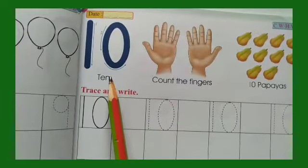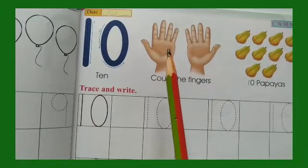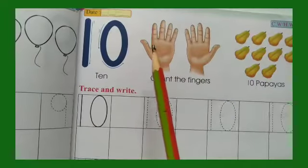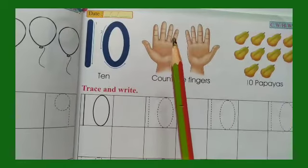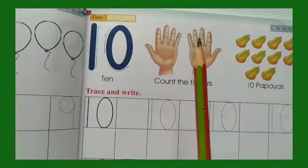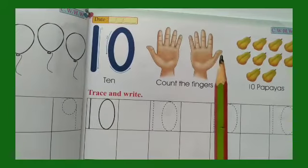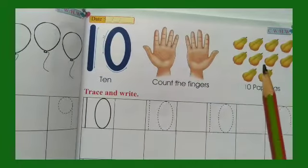So children, this is which number? Number 10. So let us count the fingers here. 1, 2, 3, 4, 5, 6, 7, 8, 9, 10. So there are 10 fingers.